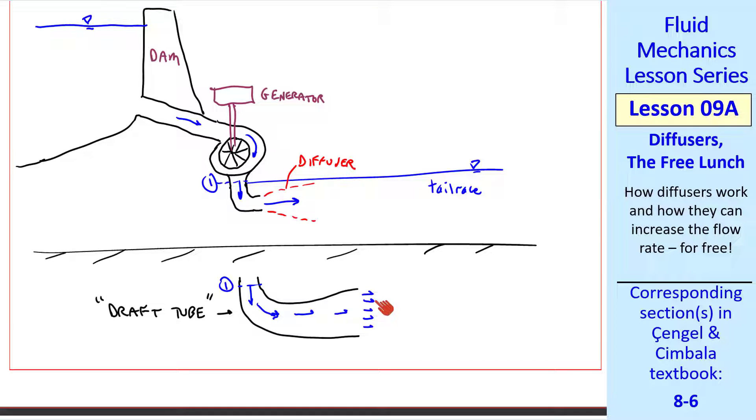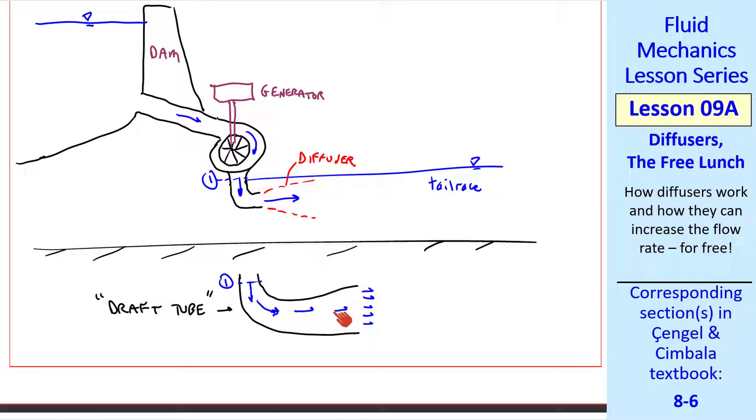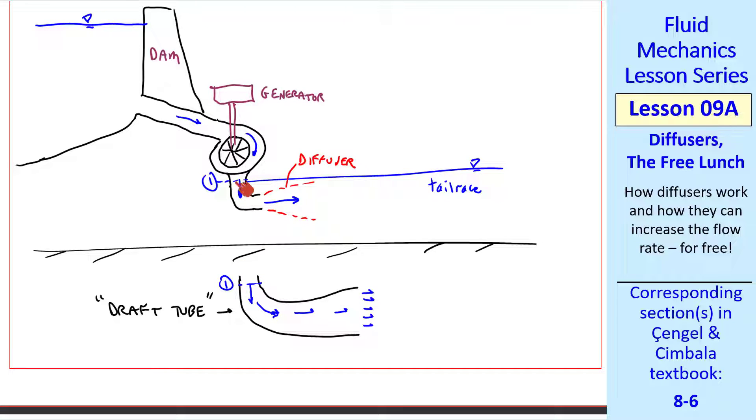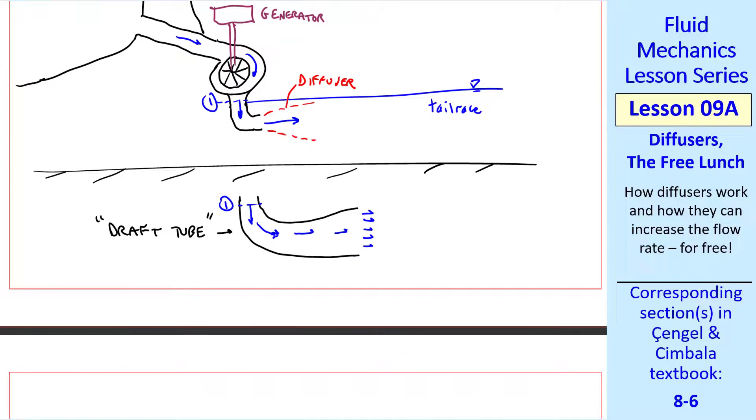Since again, the pressure here is the same as the hydrostatic pressure of the water. And since P goes up through the draft tube, as speed goes down, pressure here is lower than it was here. You can think of it as the draft tube adding some suction at point one, which can draw the water through faster. And therefore generate more power.